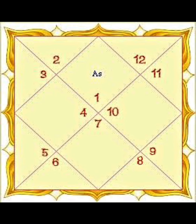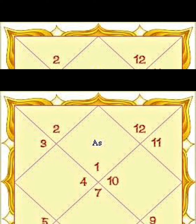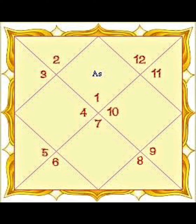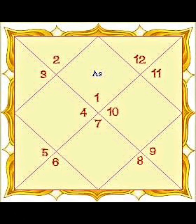The fourth round of transit covers ages 37 to 48. In this round, we give importance to building assets and property — whether the native will build their own house, what kind of property they will accumulate, and how much wealth they will gather. Spiritual inclination in life can also be studied from the fourth round of transit.